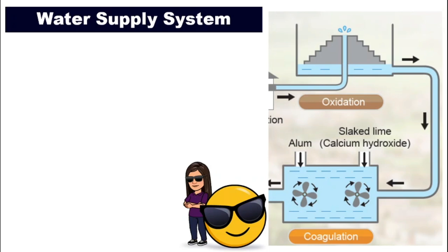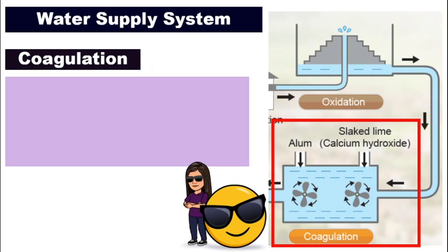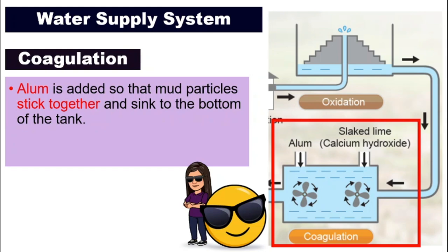After that, the water will then be channeled to the next tank called the coagulation tank. In this tank, we will add in two different things: one is alum, and the second will be slaked lime or calcium hydroxide. The alum will function to make all the mud particles in the water stick together. The mud that was not filtered out in the first filtration tank will be able to stick together and form bigger particles or bigger balls, which will become heavier and then sink to the bottom of the tank. So it acts like a super glue for the mud particles.